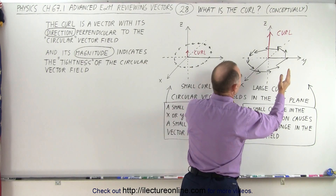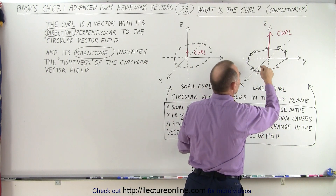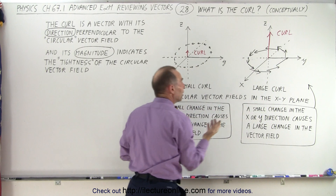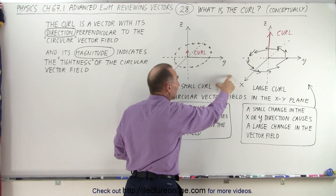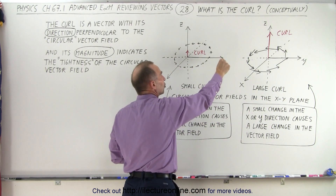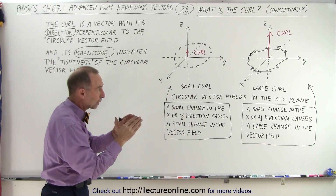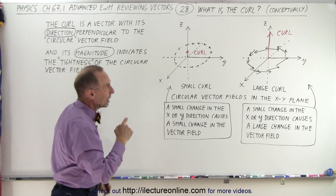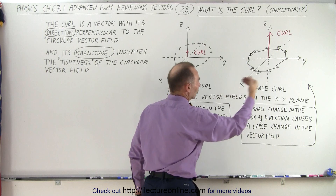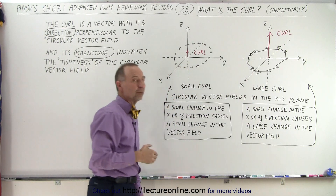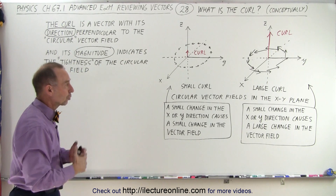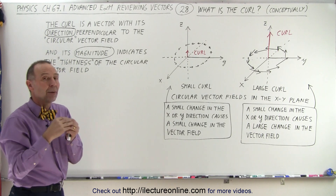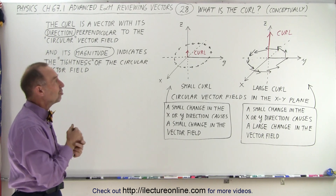It could also be that the vector field is closer to the origin, so a small change in the x-y direction causes a large change in the vector field. And if it's far away, a small change in the x-y direction causes a small change. So either due to location or due to the strength of the field in the circular motion, when you change x or y, you have a large change in the vector field, which then causes a large change in the curl.